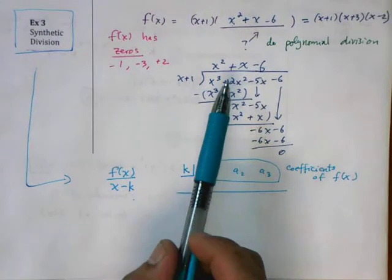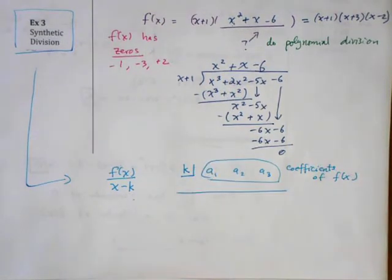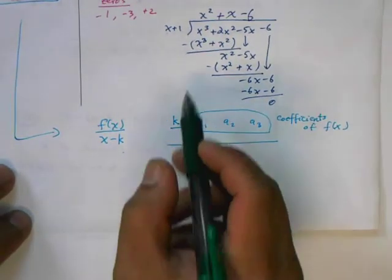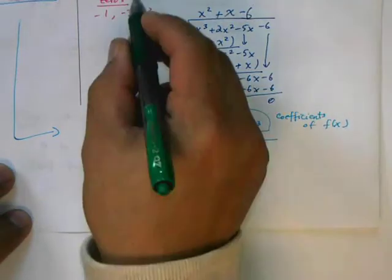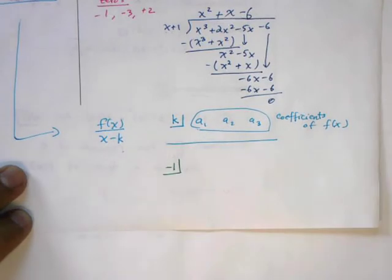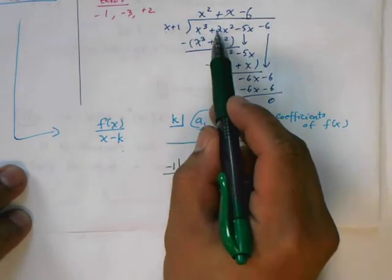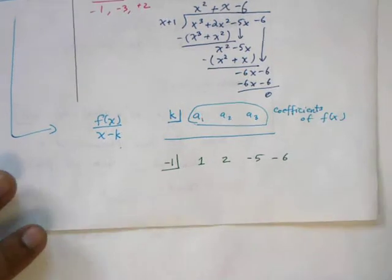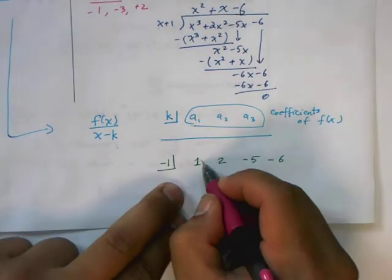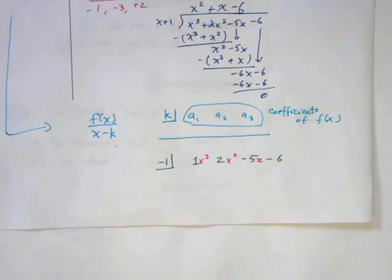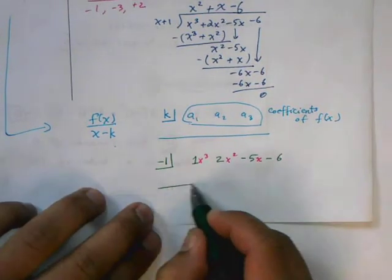And so, let's use this example here as a way to do it. So, looking at our example, I'm going to use a different color. Here we have, let me use a new sheet of paper here. So, k, in this case, is negative 1. In our example here, k is negative 1. So, I have negative 1 that goes in the box. The coefficients is 1, 2, negative 5, negative 6. And I always like to write the powers next to them, just so I have a good reminder of what these numbers actually mean. It's hard to do this if you don't really know the meaning of what you're doing.